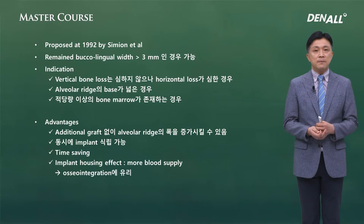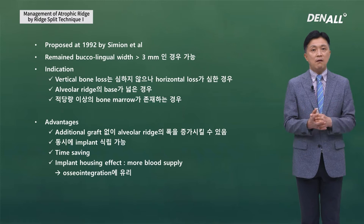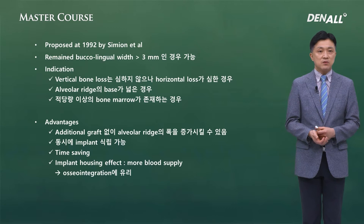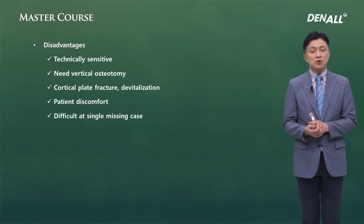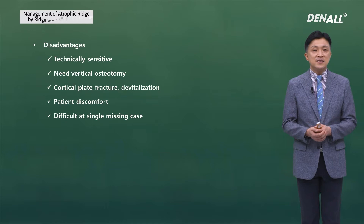The benefit of ridge split is that without additional graft, the alveolar ridge width can be increased, implants can be placed, and time can be saved. The implant housing effect means the implant is surrounded by bone, providing more blood supply and leading to accelerated regeneration. The disadvantage is that it is technically sensitive. If osteotomy is done incorrectly, there can be fracture. It requires vertical osteotomy, and if done wrong, it can lead to cortical plate fracture and devitalization.